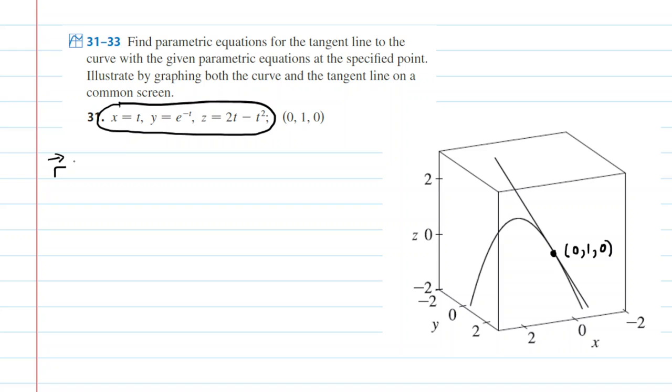So we're going to have a vector that we can call r of t, and then for the x component of the vector, we can see that x is equal to the parameter t. For the y component, we have y is e to the negative t. And then for the z component, we have 2t minus t squared.